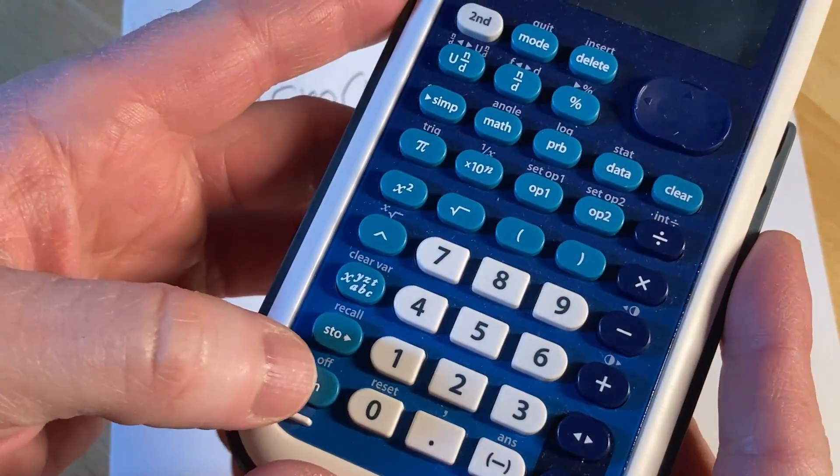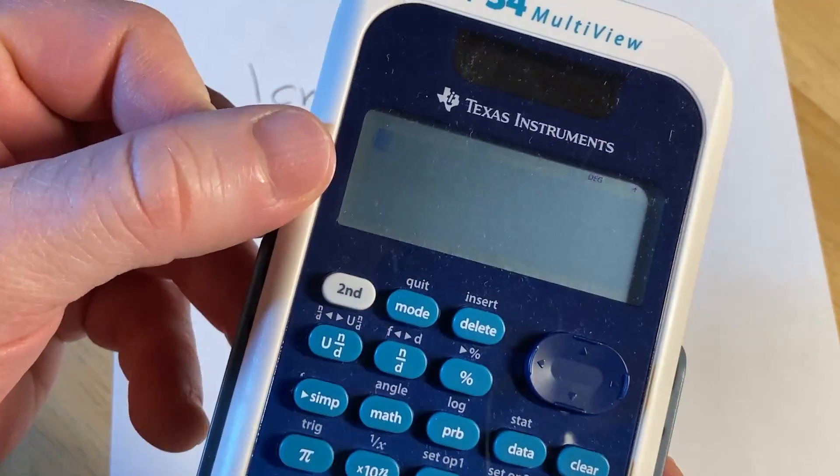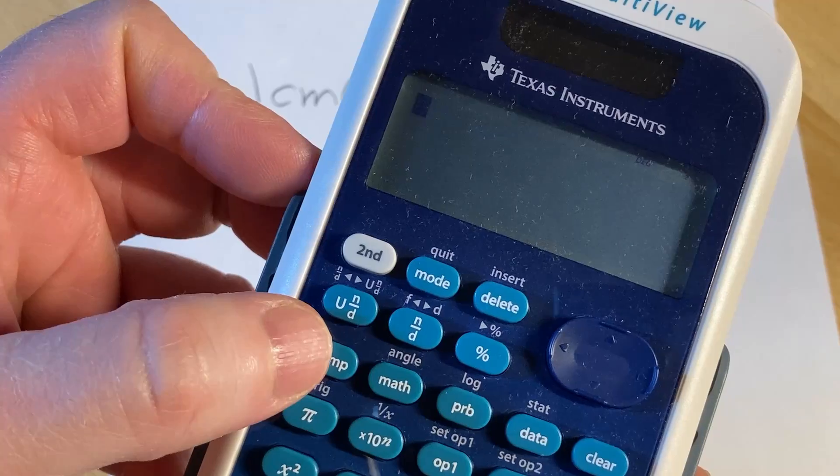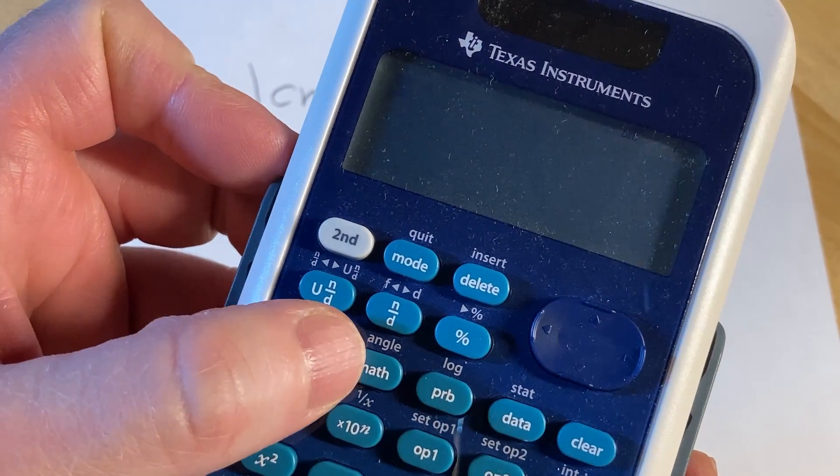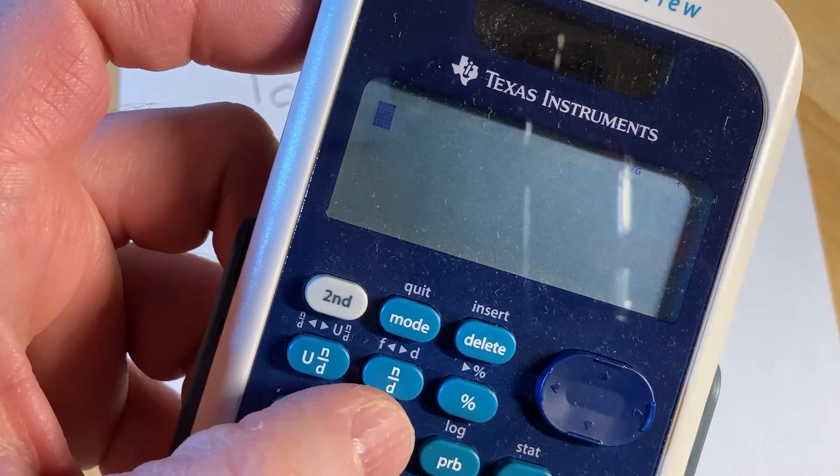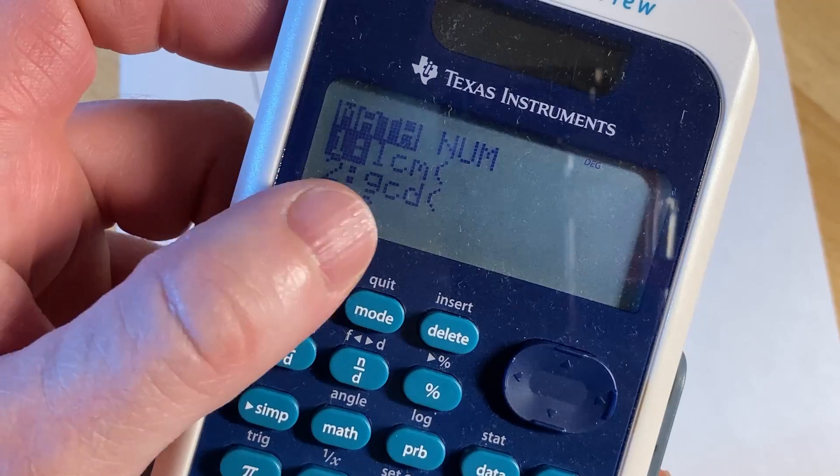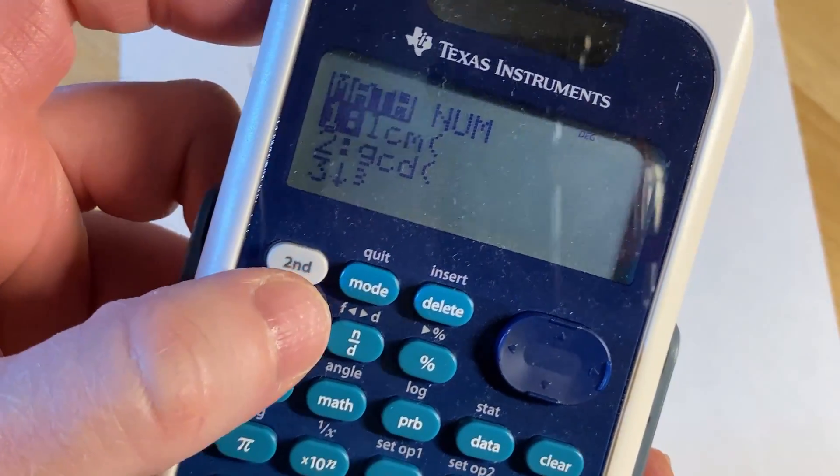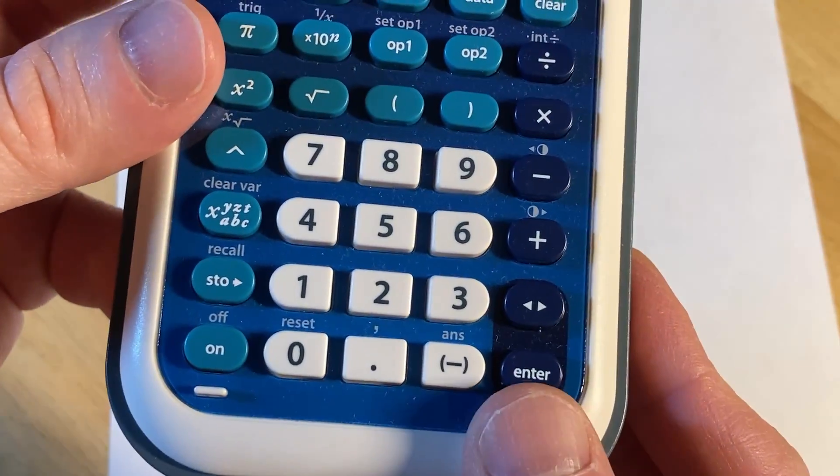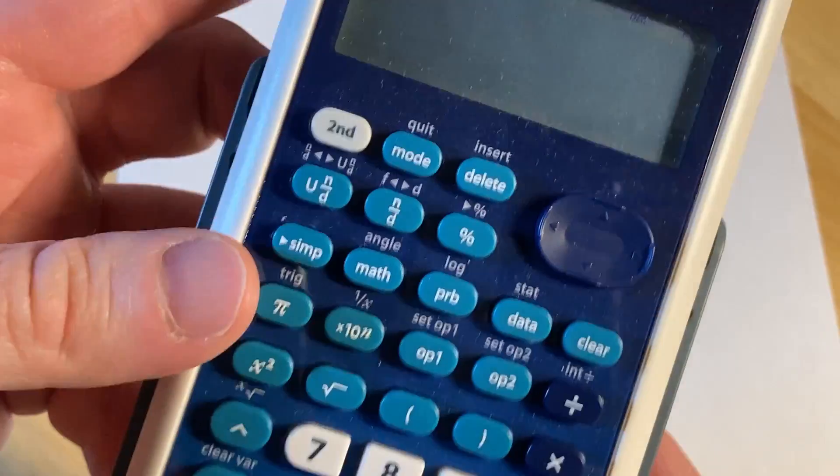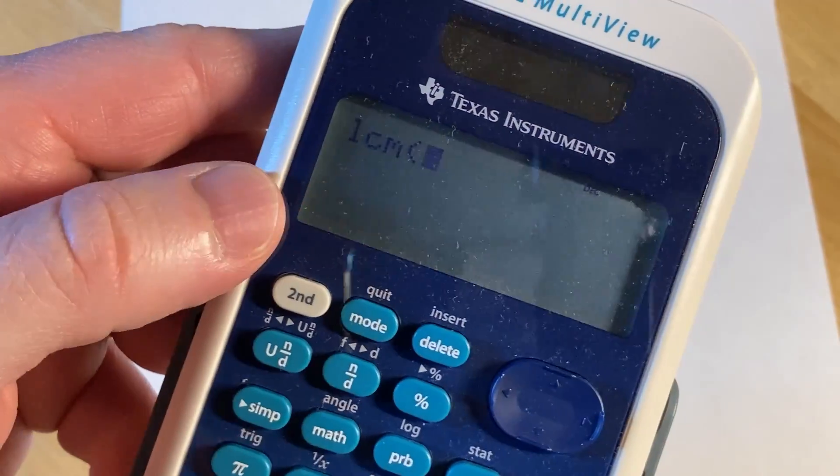Once your calculator is on, you'll see this flashing cursor and you want to press the button that says math. I'm going to press the math button and there you see the first one, LCM, least common multiple. I'm going to press enter and then you can see it displays on the screen.